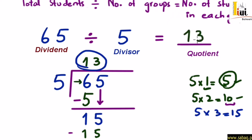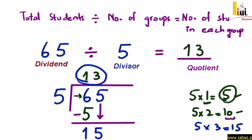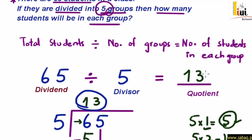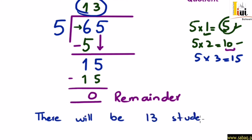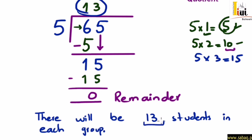तो यह हमारा जवाब है। और 13 क्या है? number of students in each group। तो यहाँ पर हम लिखेंगे: there will be 13 students in each group। उस class में 65 students थे, उन्हें हमने 5 groups में divide किया, तो हर group में 13 students होंगे। इस तरह से हम division से related word problems को solve करते हैं।